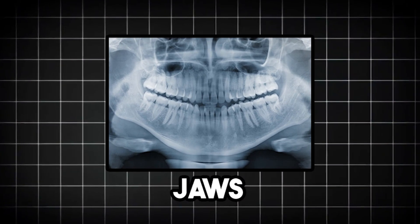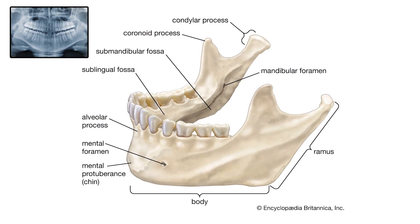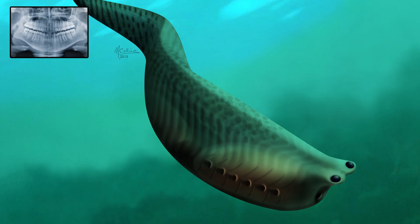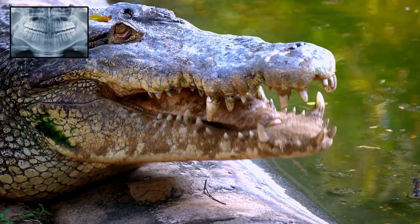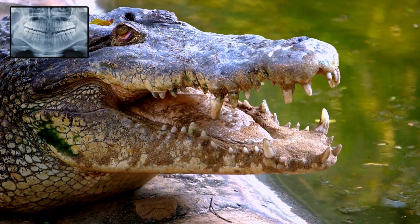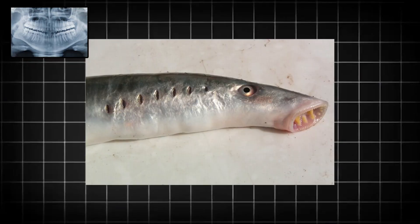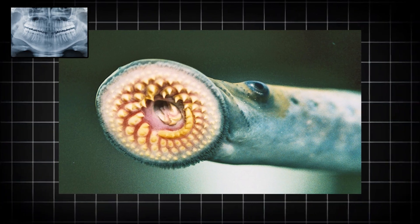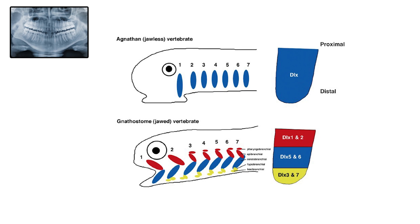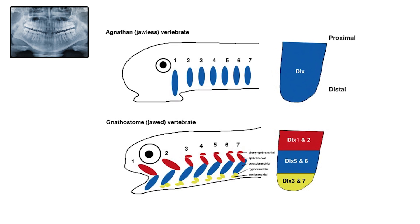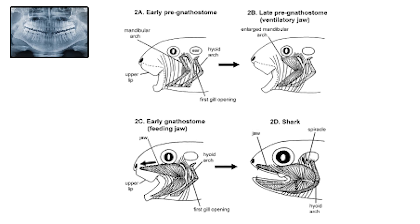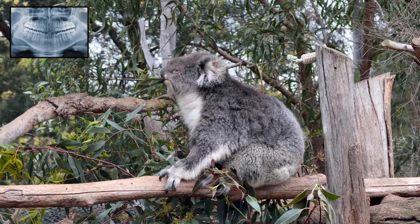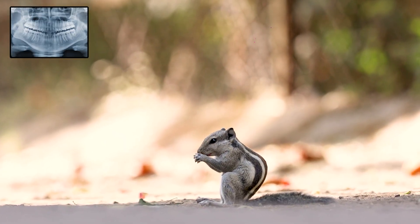Jaws are one of the most significant evolutionary adaptations in vertebrate history. A jaw is a bony or cartilaginous structure that enables animals to bite, chew, grasp, and manipulate food. Before jaws evolved, most early animals could only feed by filtering small particles or absorbing nutrients. The development of jaws revolutionized feeding strategies, allowing animals to become active predators and take advantage of a much wider range of food sources. The earliest jawless vertebrates, known as agnathans, appeared over 500 million years ago. Jaws are believed to have evolved around 430 million years ago from the front gill arches, which shifted forward and became hinged, giving rise to the first primitive jaws.